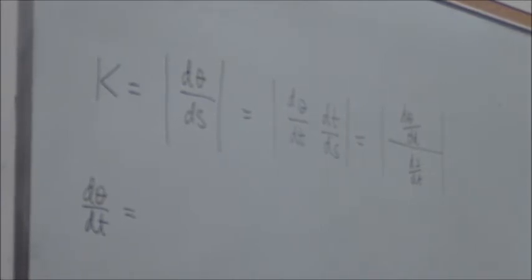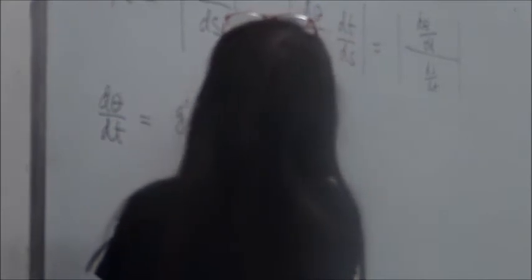It's rise over run. G prime of t over f prime of t. Correct? Or maybe that's not d theta. Is that d theta? No, that's not d theta dt.